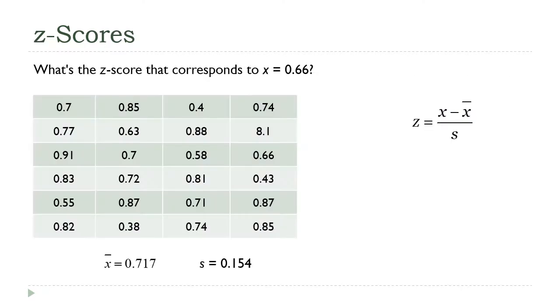Let's take a look here and do a couple of examples real quick. I have this data set, and I've already calculated the mean and the standard deviation down there at the bottom. And I want to calculate the z-score for 0.66.